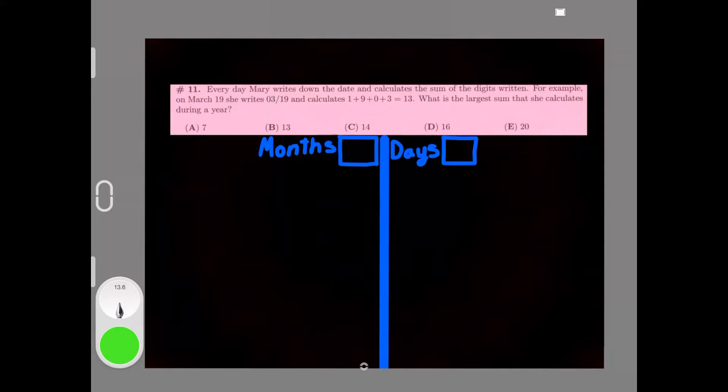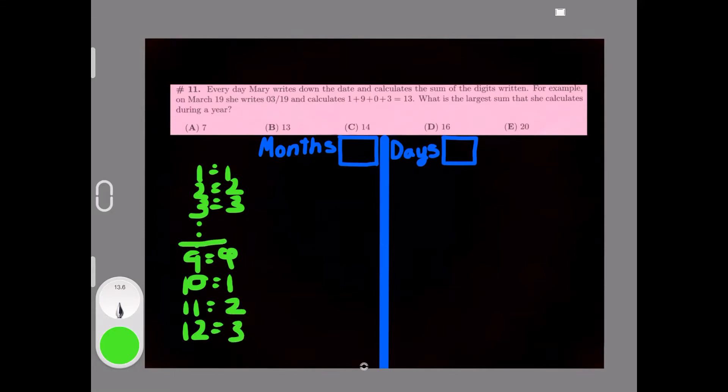There are 12 months in a year, so it'll be 1, 2, 3, all the way to 9, 10, 11, 12. So 1 equals 1, 2 equals 2, 3 equals 3, 9 equals 9. 10 would equal 1 only because it's 1+0, 11 would equal 2, 12 would equal 3. Therefore, 9 would be the greatest month.